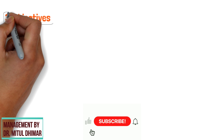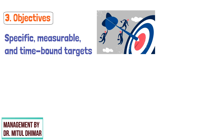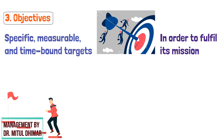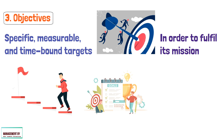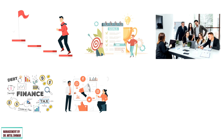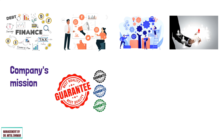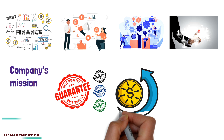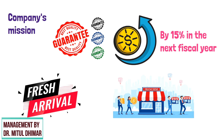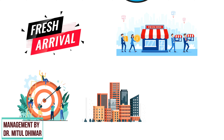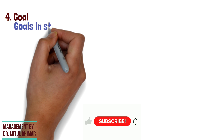Three: Objectives. Objectives in strategic management are specific, measurable, and time-bound targets that an organization aims to achieve in order to fulfill its mission. Objectives are intermediate steps that help an organization achieve its long-term goals, and can relate to different areas such as finance, marketing, operations, and human resources. For example, a company's mission may be to provide high-quality products and services, and an objective could be to increase revenue by 15 percent in the next fiscal year through the introduction of new products and expansion into new markets.